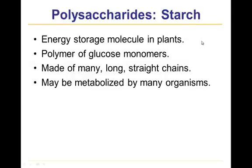Starch is made out of glucose monomers and consists of many long straight chains. The metabolism of these molecules — meaning their being broken down inside cells or the body of a living organism — occurs only on the ends of the molecule. Having many straight chains means metabolism can occur at the end of each chain. Many organisms have the enzymes to break starch down, so it is widely utilized by living things as a food source.